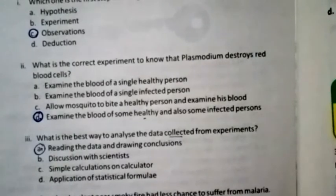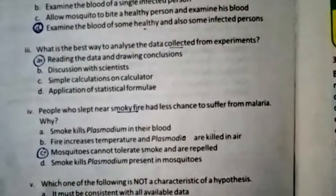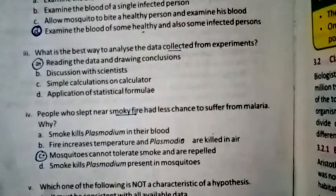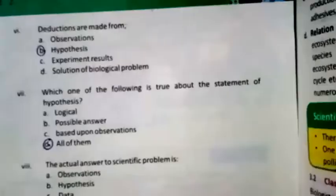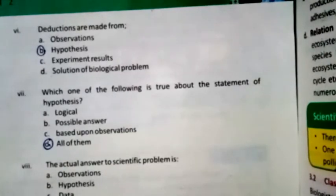Question five: Which of the following is not a characteristic of a hypothesis? The right option is C — it must be correct. Question six: Deductions are made from observation, hypothesis, experiment, results, or solution of a biological problem? The right option is B — hypothesis.